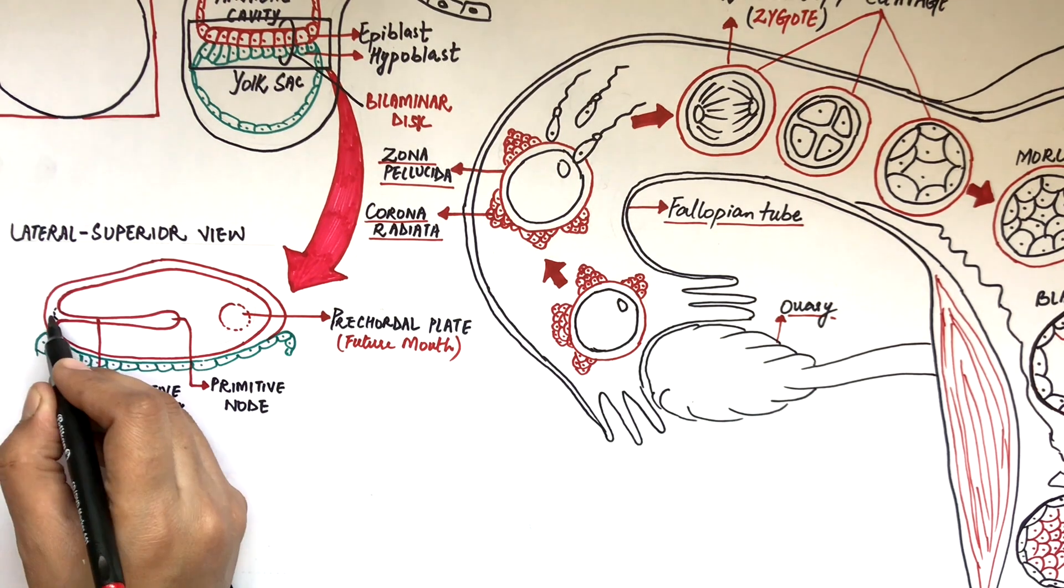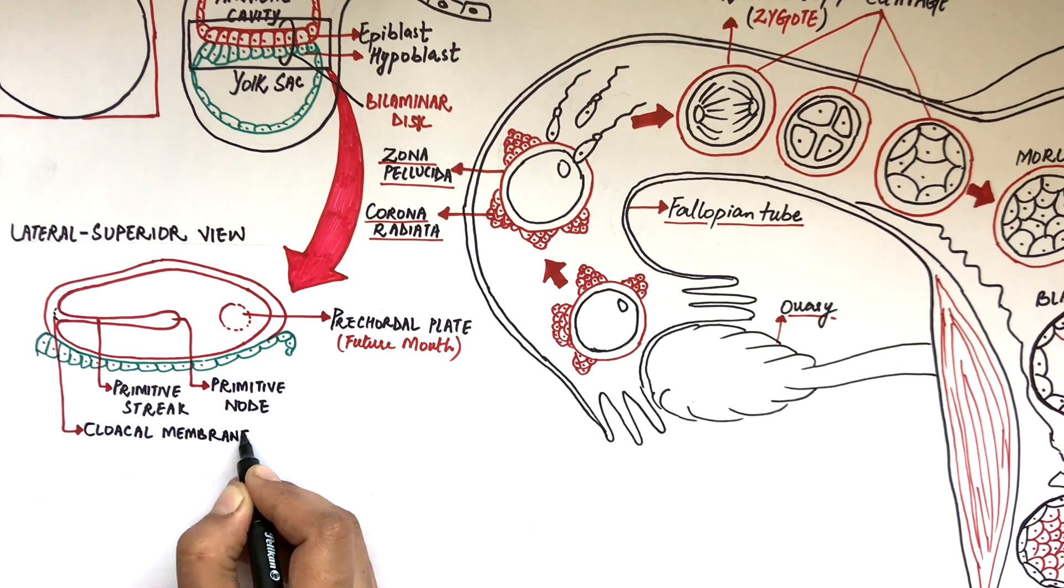At the caudal or tail end, this bilaminar disc is limited by the cloacal membrane. The cloacal membrane will become the future anus of the baby.